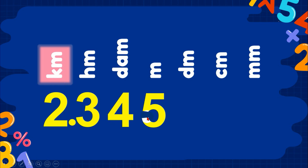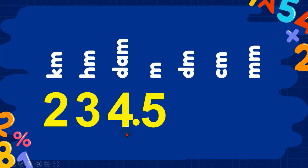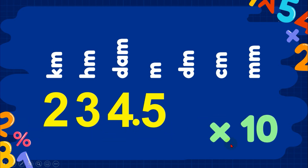What we do is simply move the decimal point. For example, if we have 2.345 kilometers and want to convert to hectometer, we move the decimal point one place to the right, giving 23.45 hectometers. Moving it again gives 234.5 decameters. Going to the right means multiplying by 10 per move.